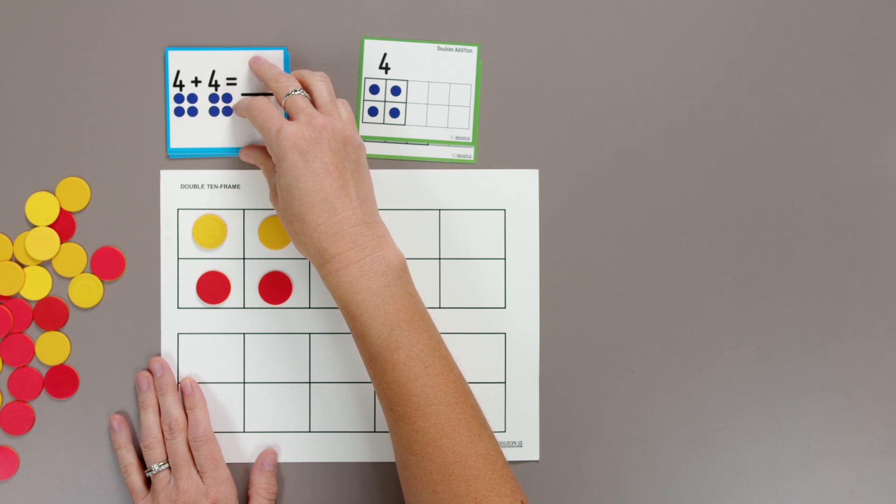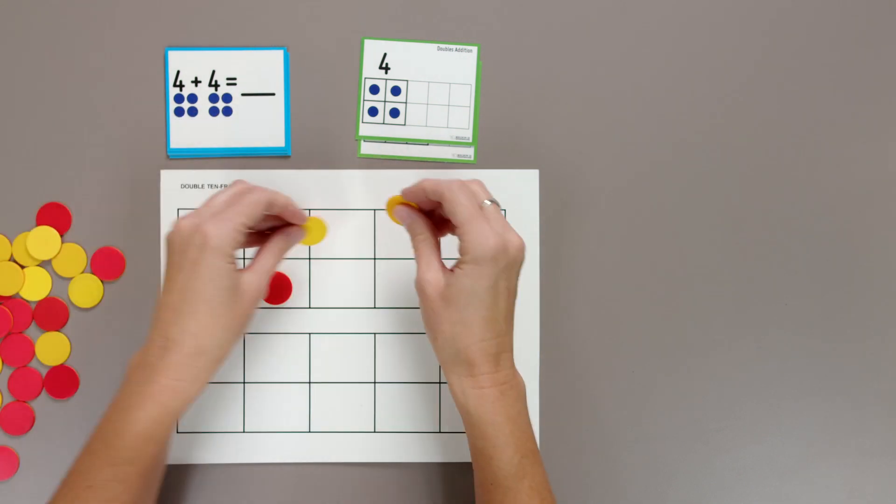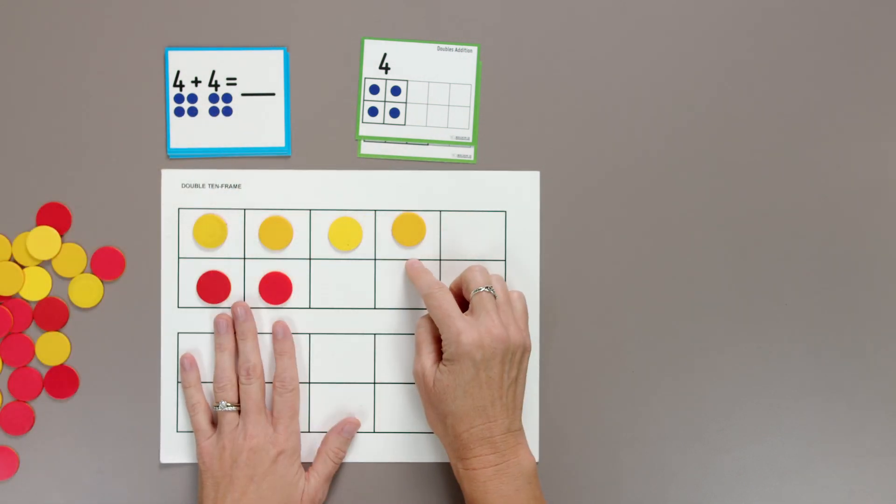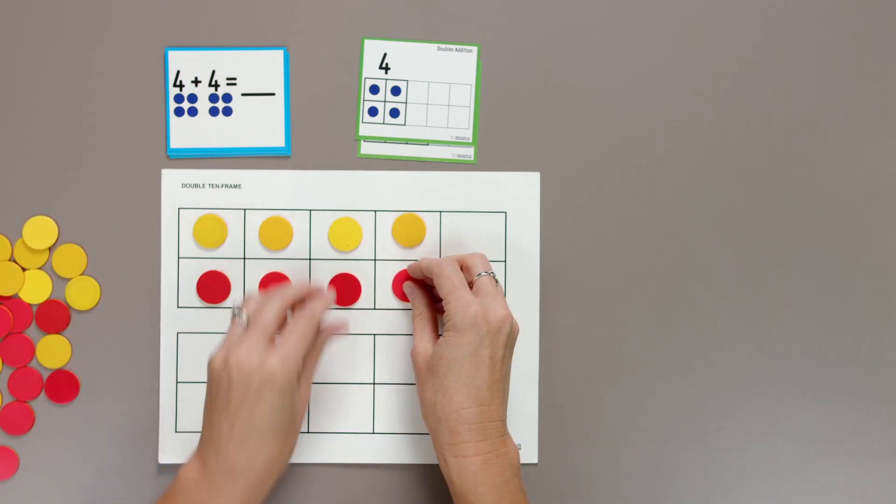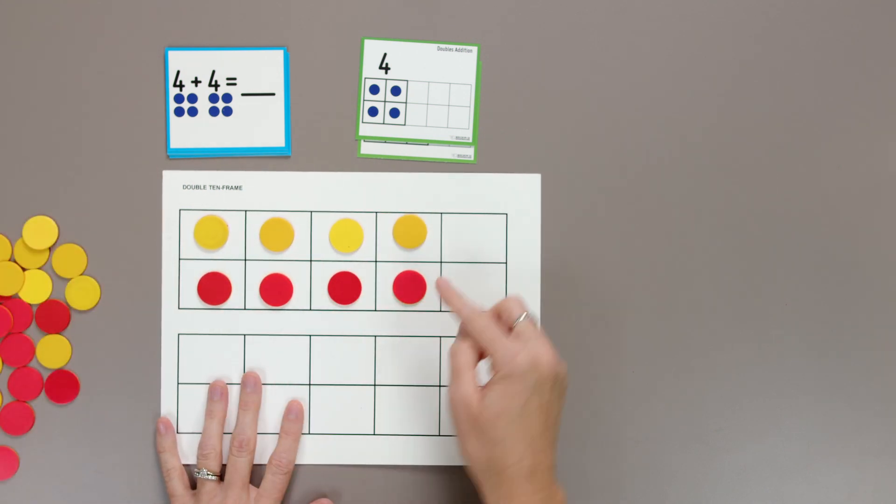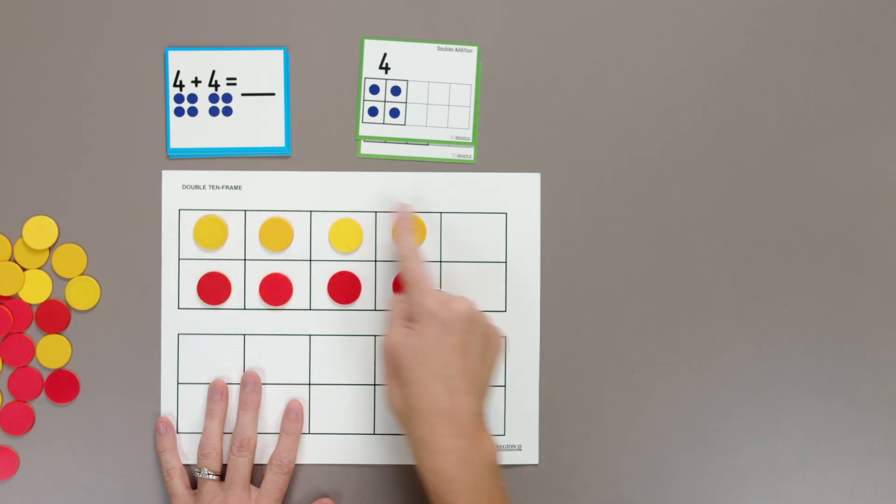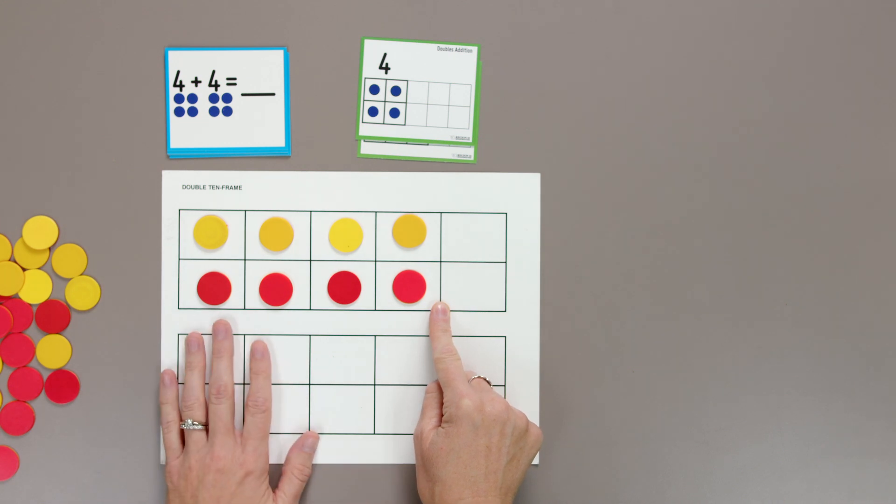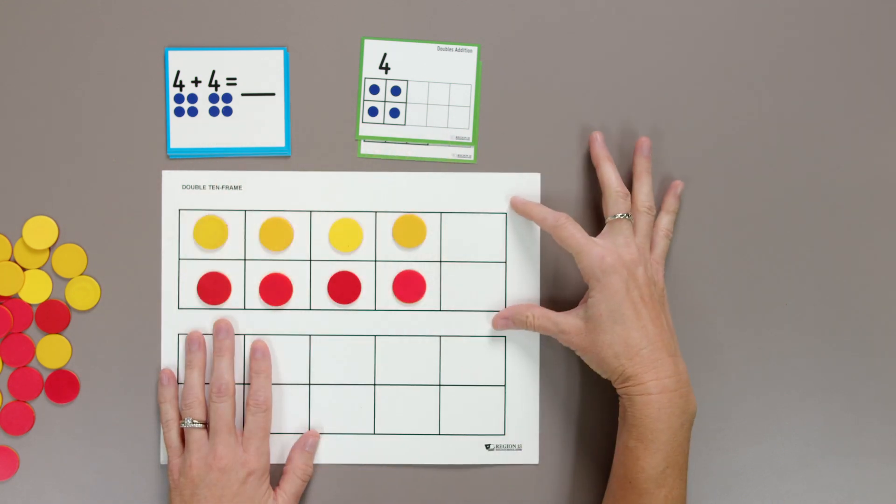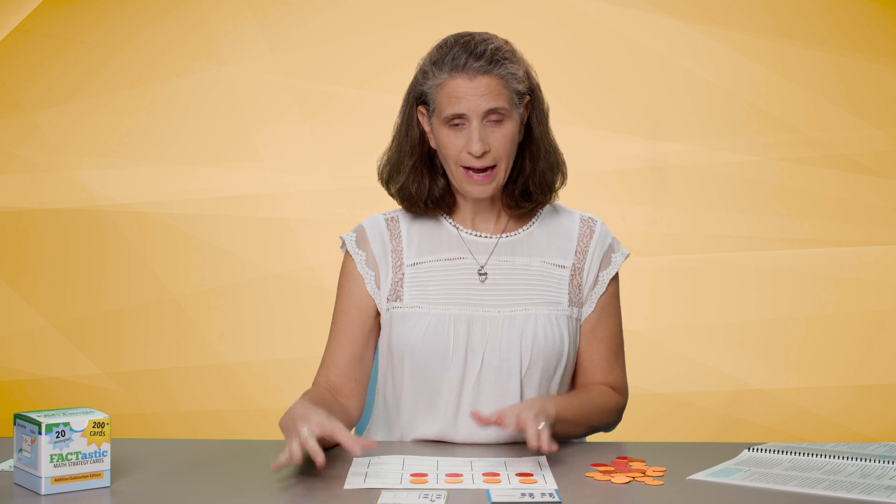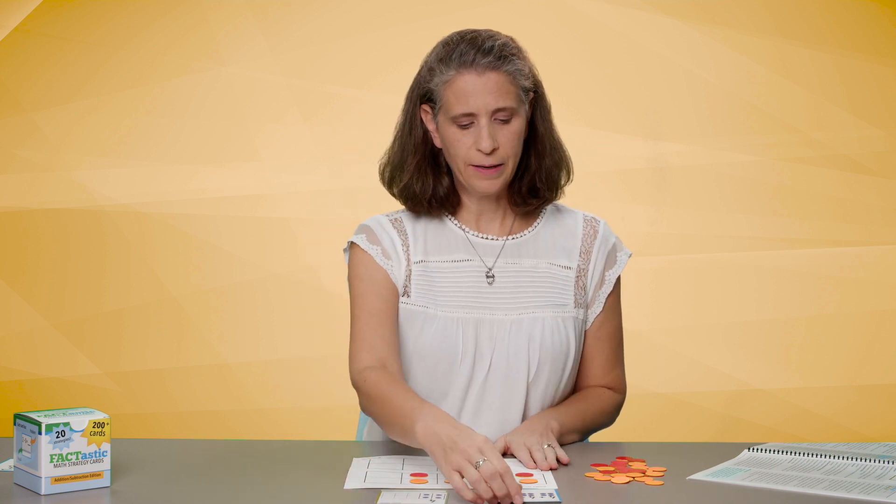Four plus four is next. Let's build four along the top row and four on the bottom row. Four yellow, four red, four and four is eight. You got it. Four and four is eight. If we build this on the 10 frame, take a picture in your mind. Click. All right. I've got a picture of it. Four and four is eight.